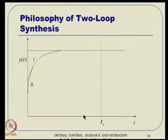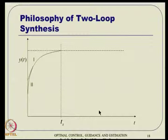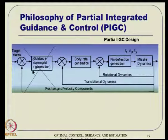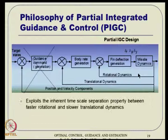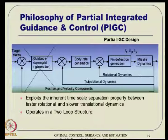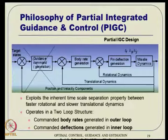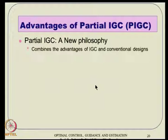By removing the outer guidance loop and operating in two loops instead of three, the settling time is reduced. Even for small T_go problems, if T_go exceeds the reduced settling time, the job can be done. The partial IGC idea is: come out of the typical guidance loop — whatever is left is called partial IGC design. It exploits inherent time-scale separation and operates in two loops: the outer loop directly generates commanded body rates Q* and R*, and the inner loop uses those to generate fin deflections.